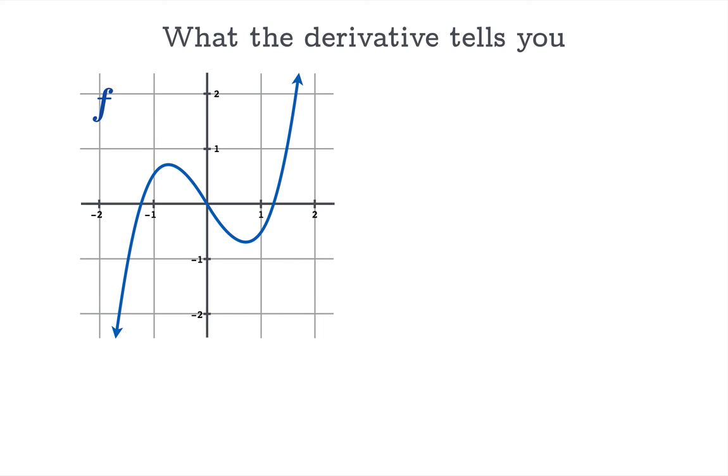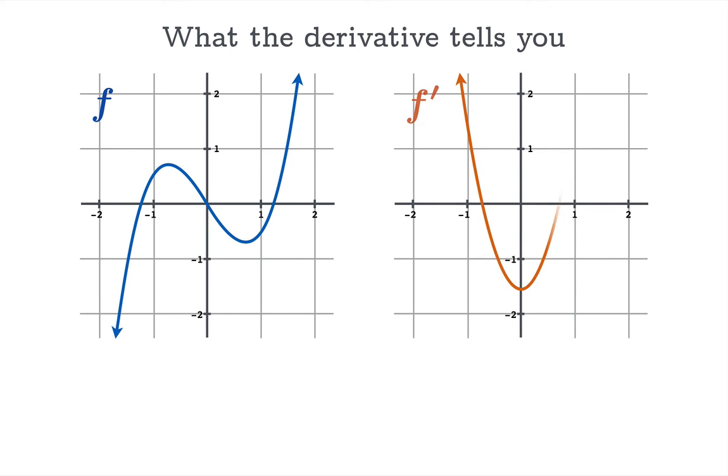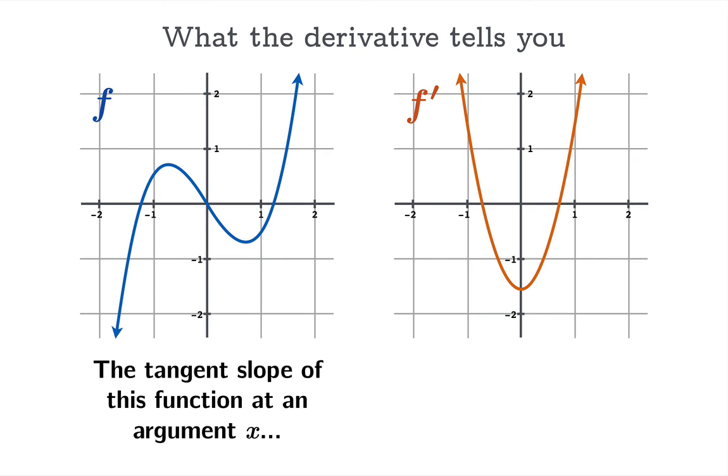In this example now I'm going to have a function on the left and its derivative on the right. I'm not even going to provide you with the formulas. I'm just going to look at this graphically. So this is a conceptual exercise. The tangent slope of this function at an argument x is given by the value of this function i.e. f prime of x. So how does this work?